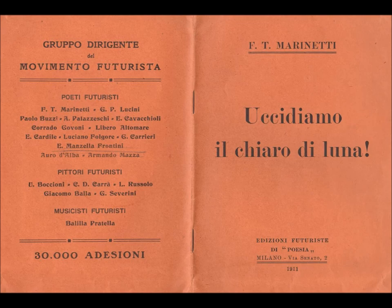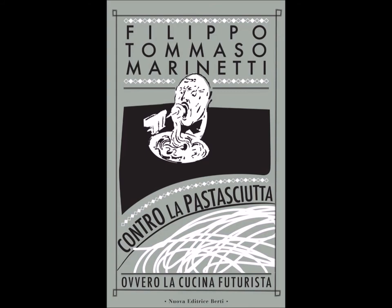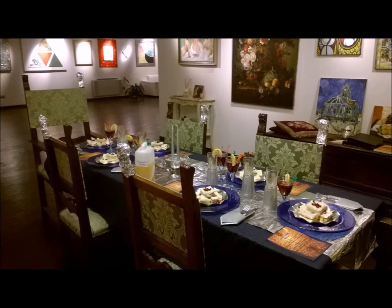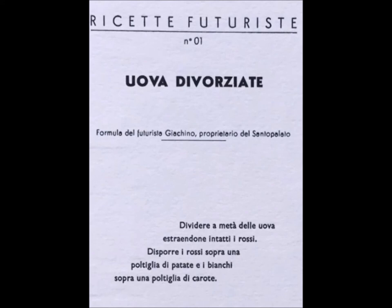I futuristi, che avevano dichiarato 'uccidiamo il chiaro di luna', combattevano adesso contro la pasta asciutta, definita 'assurda religione gastronomica italiana', per rendere gli italiani più snelli e scattanti nella mente e nel corpo. Nuovi banchetti futuristi dovevano essere assolutamente simultanei, implicando l'uso contemporaneo dei cinque sensi. La cucina futurista, eccentrica, antisolenne e scenografica fu però una meteora, un gioco che durò poco, anche perché — almeno in Toscana — forte era la tradizione, e prevalsero le ricette equilibrate basate sull'igiene e risparmio di Pellegrino Artusi.